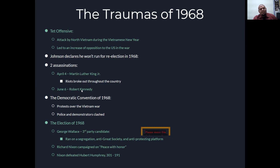June 6th, Robert F. Kennedy — RFK — was assassinated as well. This was very sad because there was a future for Robert Kennedy — everyone loved his brother JFK, and there was promise for the future for his younger brother. Sadly, he also gets assassinated.